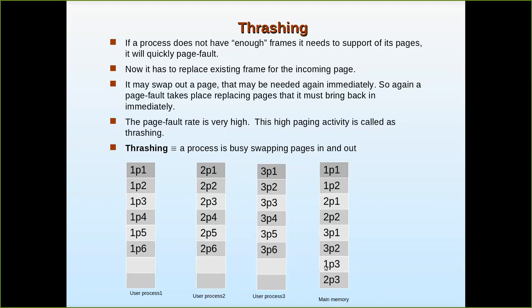Now what happens? After page three of user process one is executed, it needs page four. In the logical address space, page four is there but it is only a reference — it must be loaded from secondary storage. A page fault takes place. The page table is checked and finds the invalid bit indicating this page is not in main memory. Page four is brought in from secondary storage and loaded into a frame, and the page table is updated.